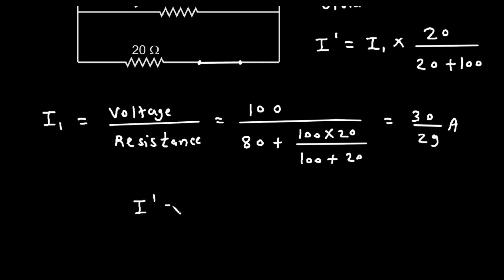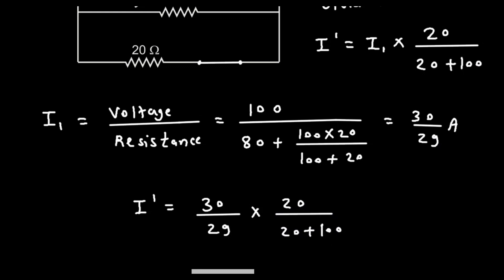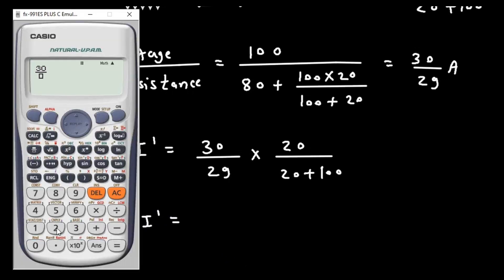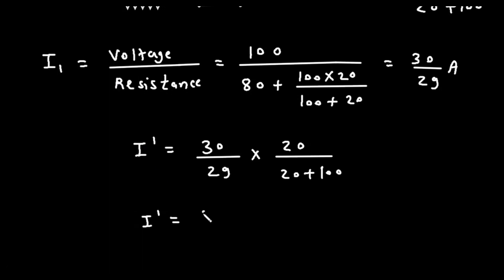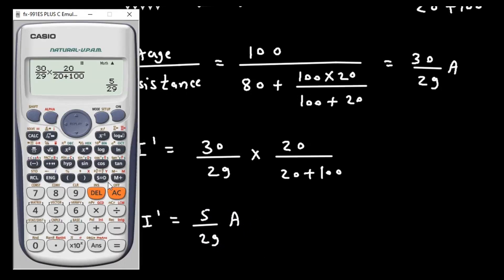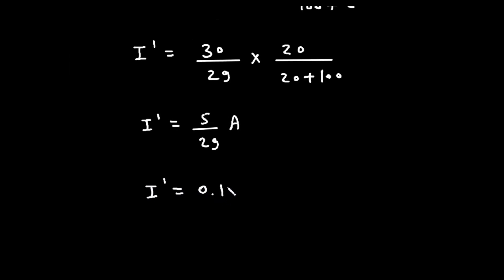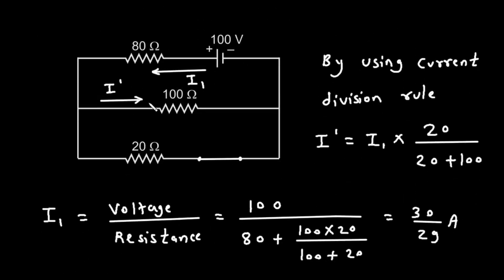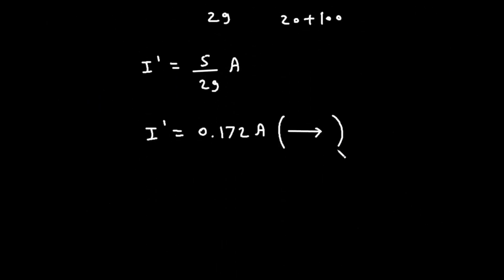Putting this value in, I prime = (30/29) × 20/(20 + 100), which simplifies to 5/29 ampere, or 0.172 ampere. The direction of this current I prime is rightward.